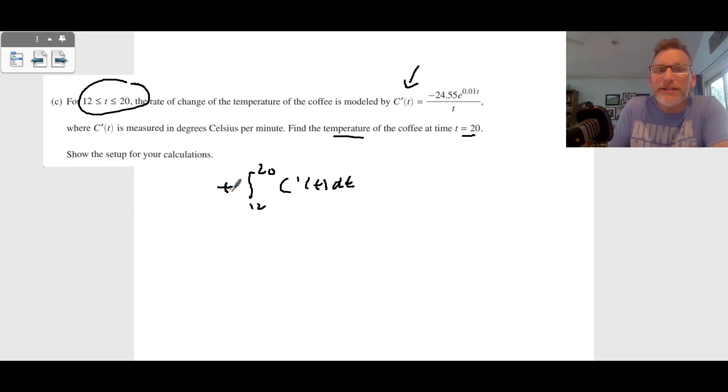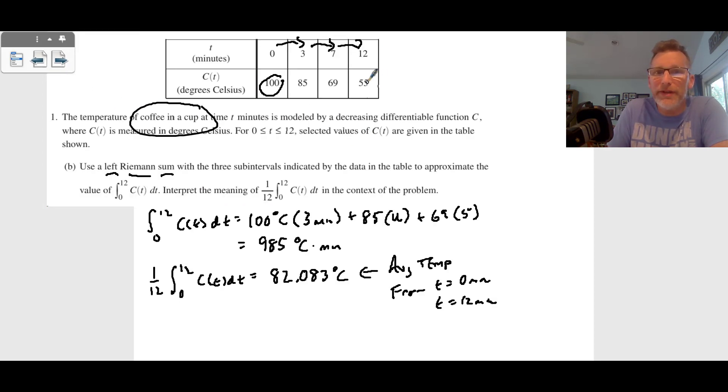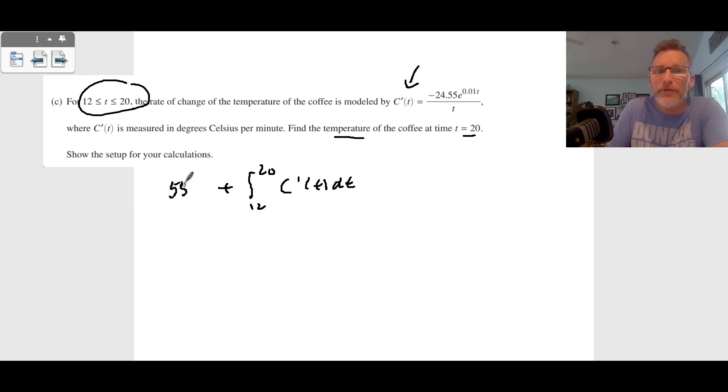But watch out. There is the temperature of the coffee at exactly 12 minutes. So we come back. We know at 12 minutes, the coffee is 55 degrees Celsius. So 55 degrees Celsius is our initial temperature plus the displacement of the temperature from 12 to 20 of this function. We do this in our calculator, and we end up getting 40.3292 degrees Celsius. And that's the temperature of the coffee at time equals 20.